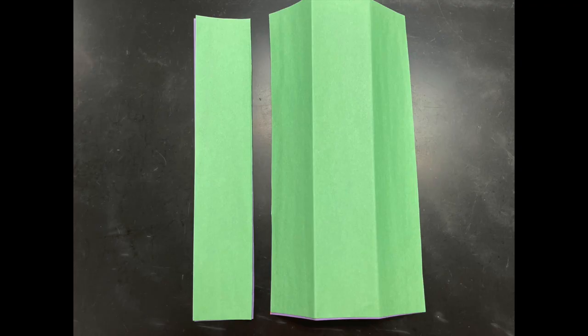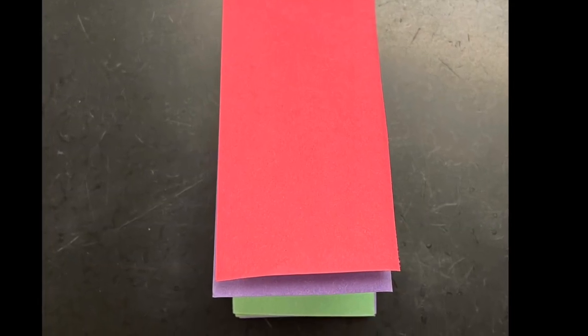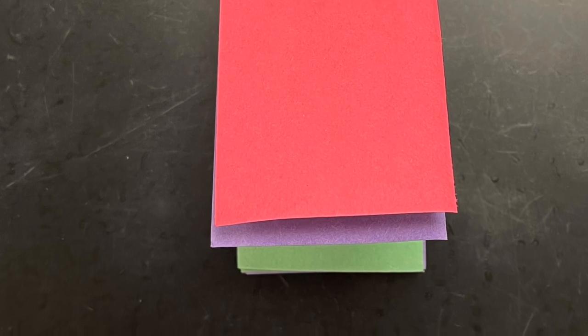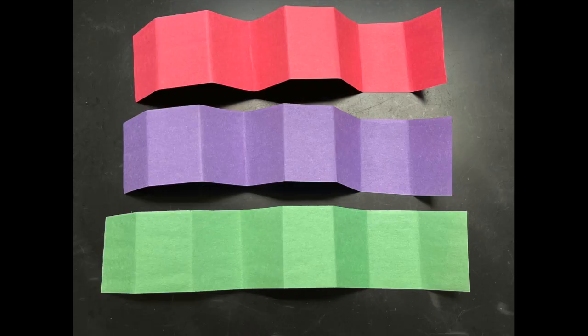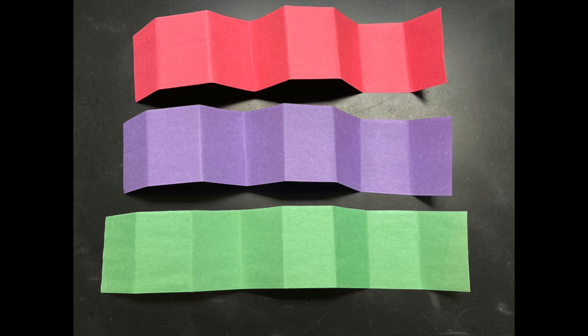When you open it up, I want you out of the four sections to cut one section off. With that one section, which has three papers of course, you're going to fold that down, and then you're going to fold it down again, and then you're going to fold it down again, so when you open it up, you're going to end up having three different colors with eight different sections each.